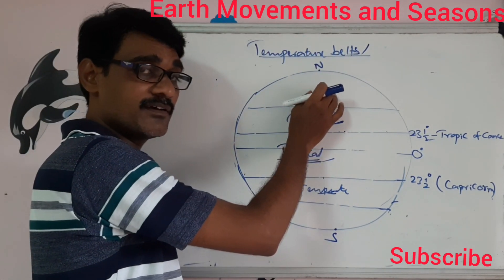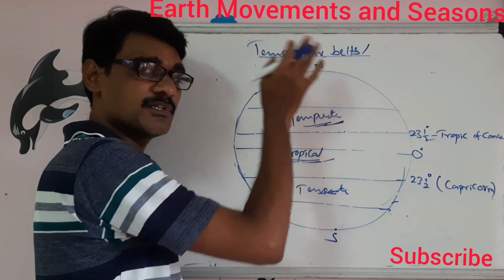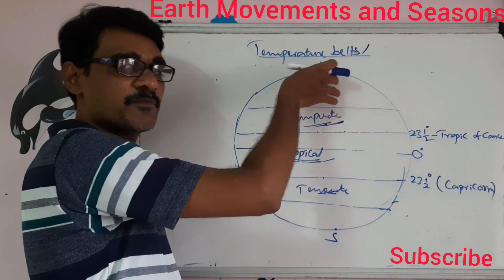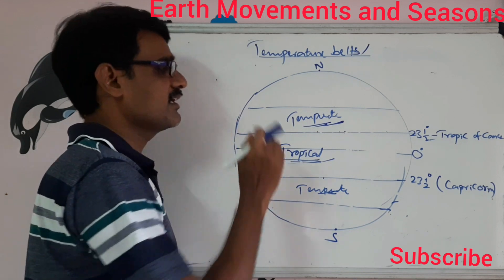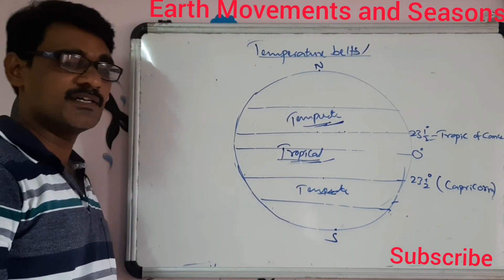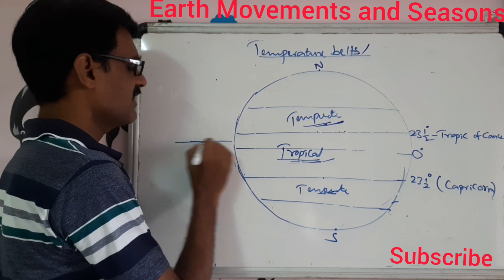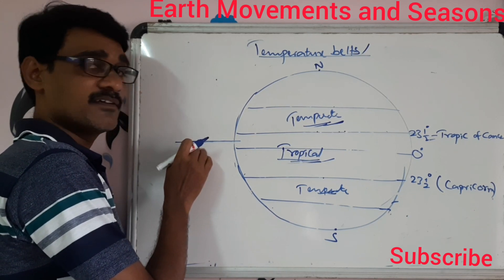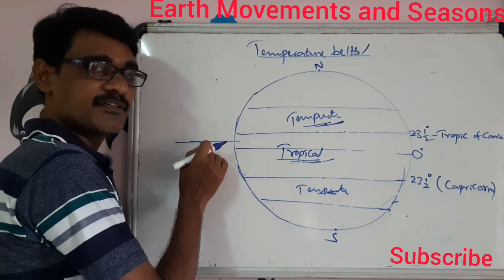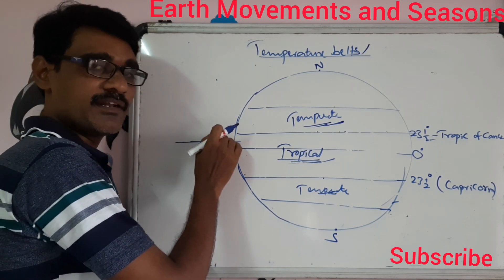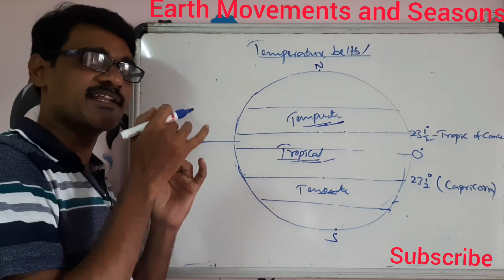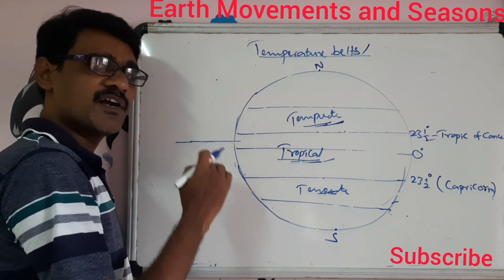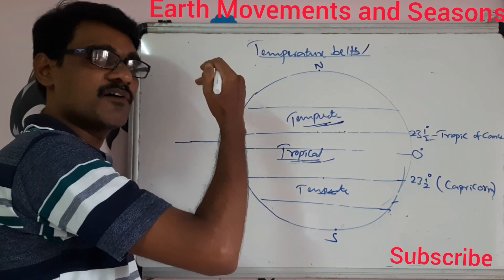We can call it six months summer and six months night with full darkness. By the slanting of sun rays, they get some dim light, but the sun doesn't rise above the horizon. The horizon is the line where the sky and earth appear to meet. In summer, when the sun does rise above the horizon, the region gets some heat.